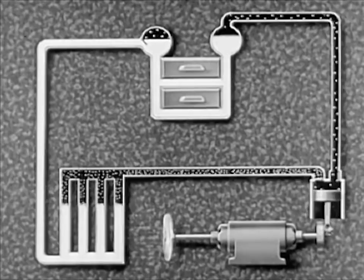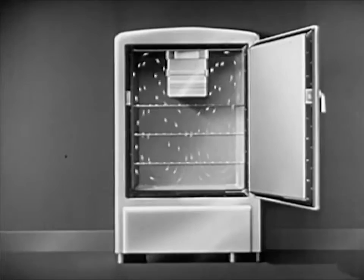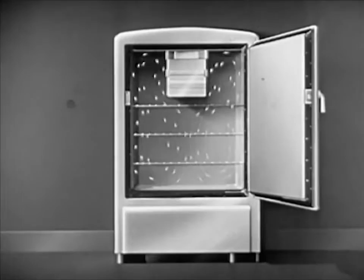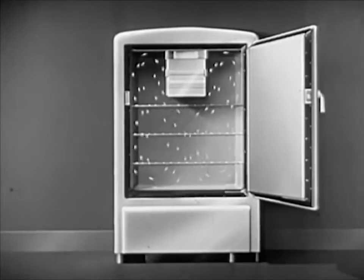As a result of heat being withdrawn from the freezing compartment, convection currents are set up in the air within the refrigerator. Cold air is heavier than warm air. Hence, the cold air moves downward from the freezing compartment towards the bottom of the refrigerator. The air which has been warmed by heat taken up from the foods is forced upwards. This warmer air comes in contact with the freezing unit, is cooled, and the circulation continues.